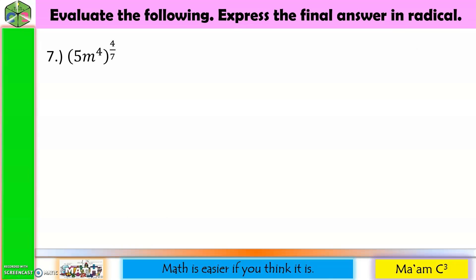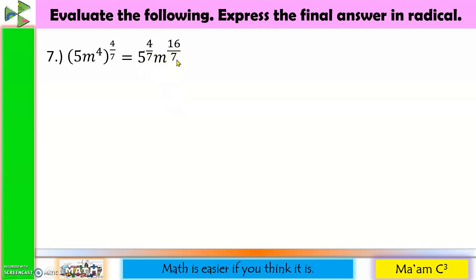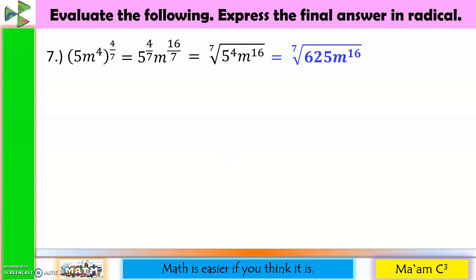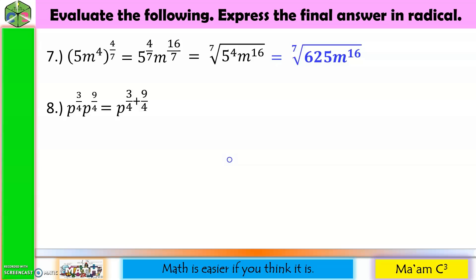Number 7: the quantity 5m to the 4th, raised to 4 over 7. Distributing the exponent gives 5 raised to 4 over 7 times m raised to 16 over 7, since 4 times 4 is 16. The denominator 7 becomes the index, so this becomes the 7th root of 5 to the 4th times m to the 16th power. Since 5 to the 4th is 625, the answer is the 7th root of 625m to the 16th power. Number 8: p raised to 3 fourths times p raised to 9 fourths. Same base, so we add the exponents: 3 plus 9 is 12, giving p raised to 12 over 4. Since 12 divided by 4 is 3, the answer is p cubed.